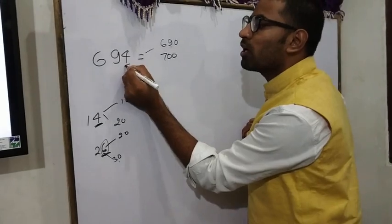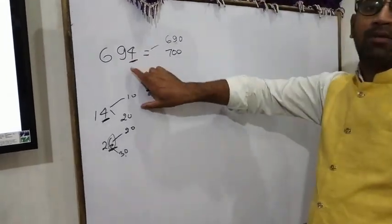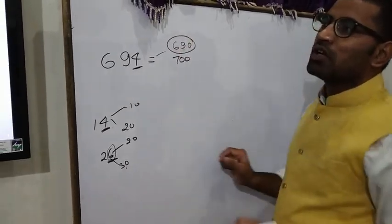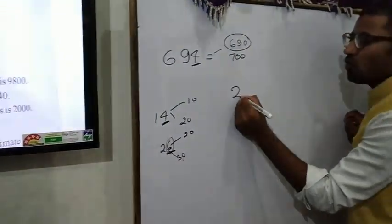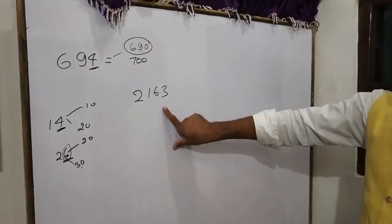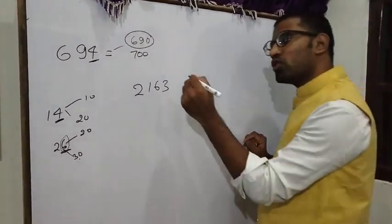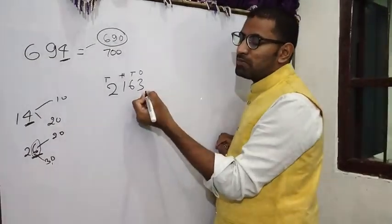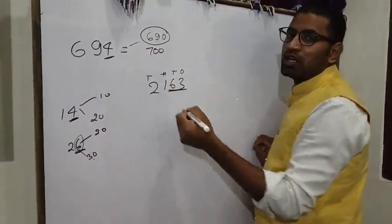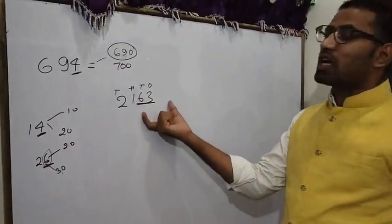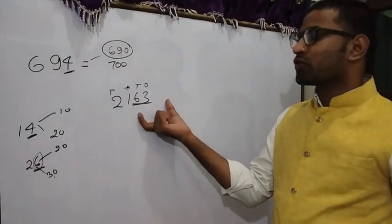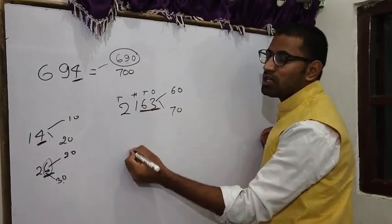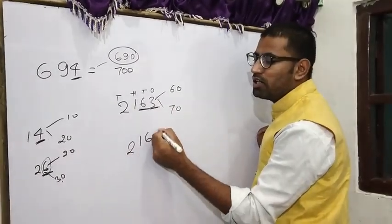We have 4 in the units place. So 694 will round off to 690. Next question: 2,163 will be rounded off. You will see tens place, not ones, tens, hundreds, thousands. You'll see tens place, which is 63. 63 will be rounded to 60 or 70. Here is 3, so the answer is 2,160.